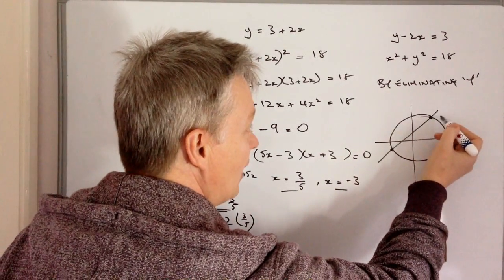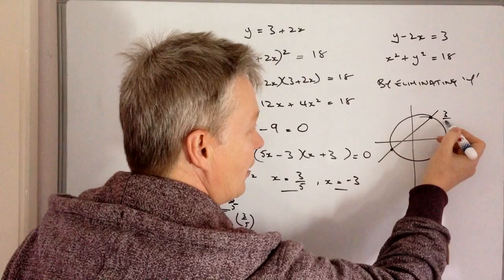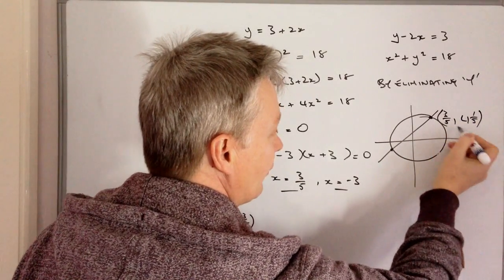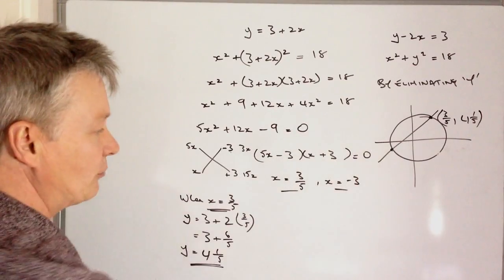Okay, so when x equals 3 over 5, y equals 4 and 1 fifth. So that's this point here. This point is going to be 3 over 5 and 4 and 1 fifth.